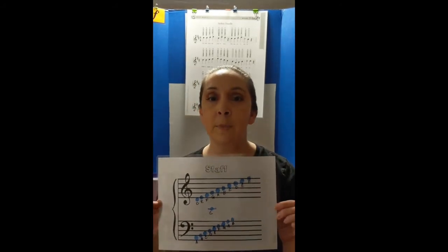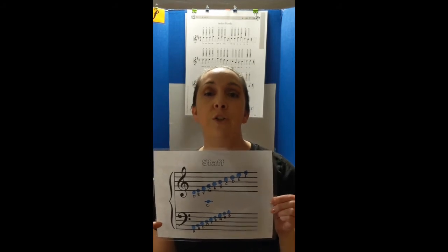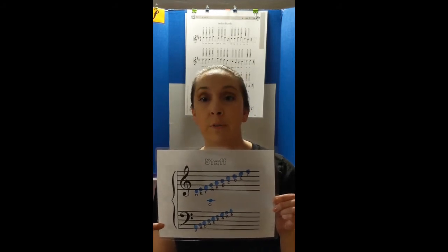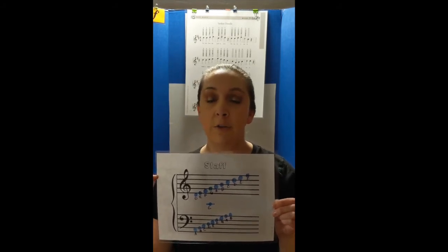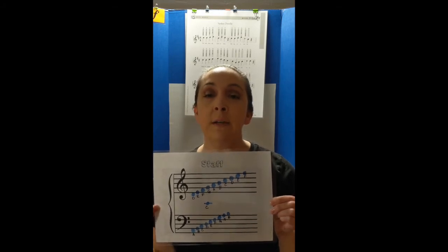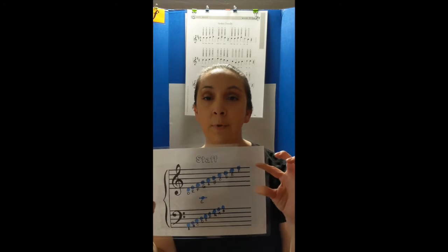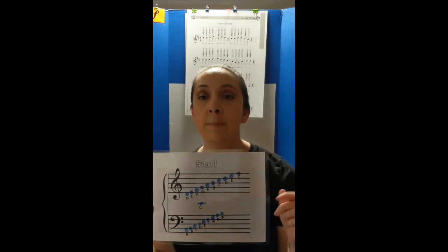We already learned about the staff — it is two sets of five lines and four spaces each. The bottom set is called the bass clef and it shows the low notes, and the top set is called the treble clef and it shows the high notes. We're only going to be learning the notes on the treble clef today because our tin whistles only play these upper high notes.